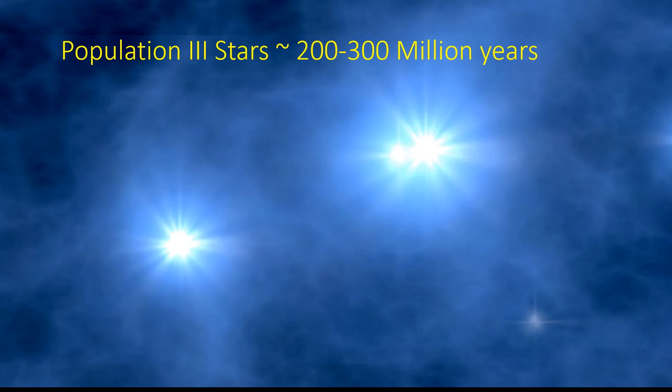These early stars, which astronomers call Population III stars, were super massive compared to the sun and shone extremely brightly for about 10 million years. This is a short lifetime compared to the sun, which will last for about 10 billion years.